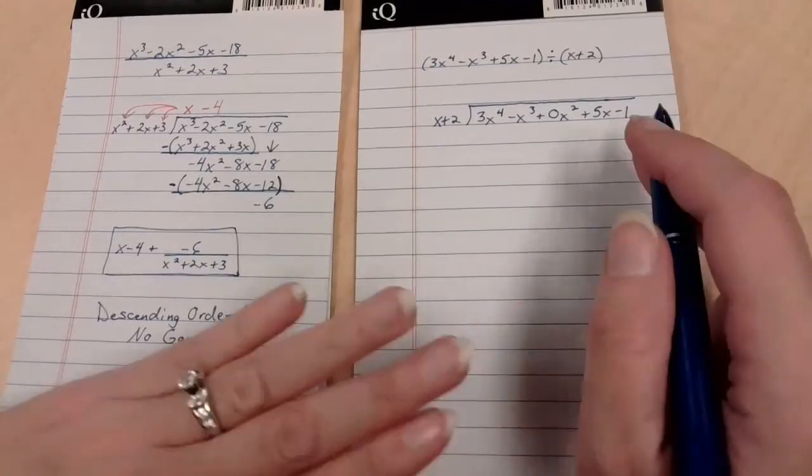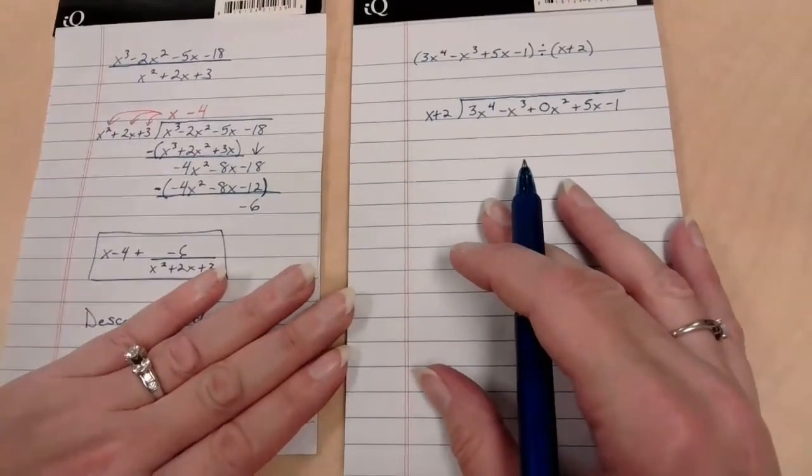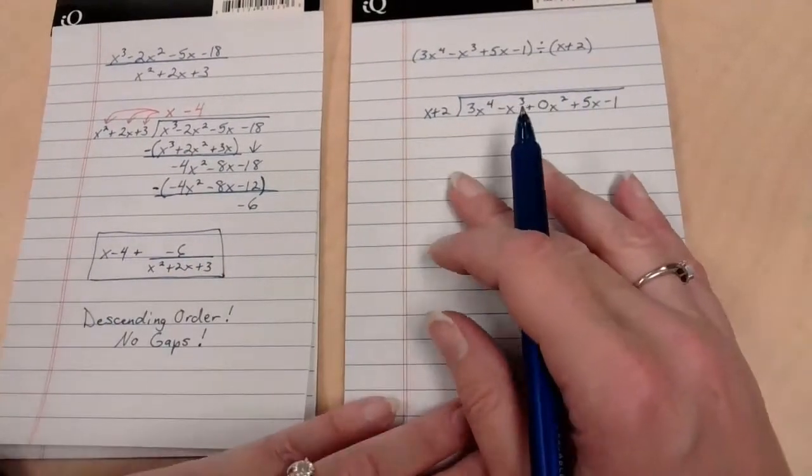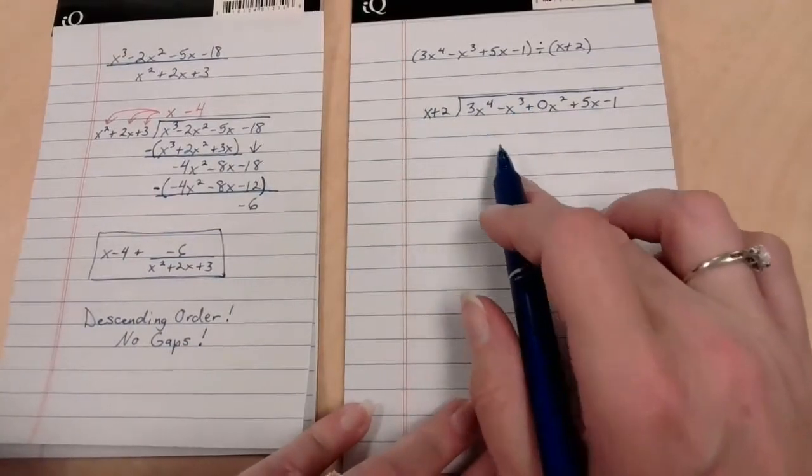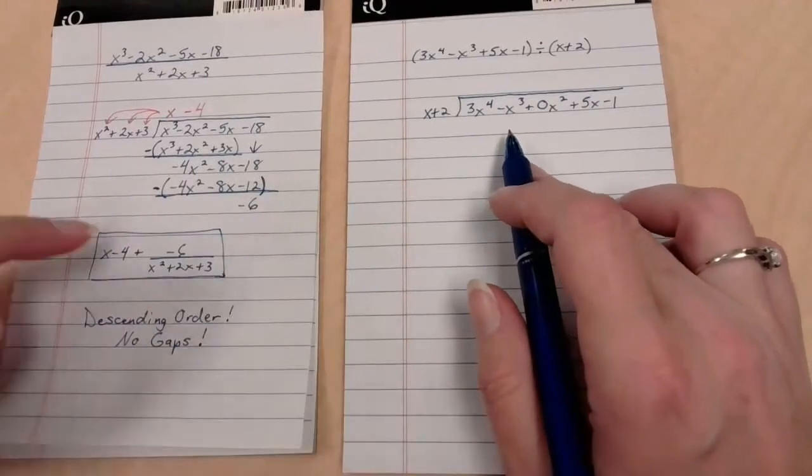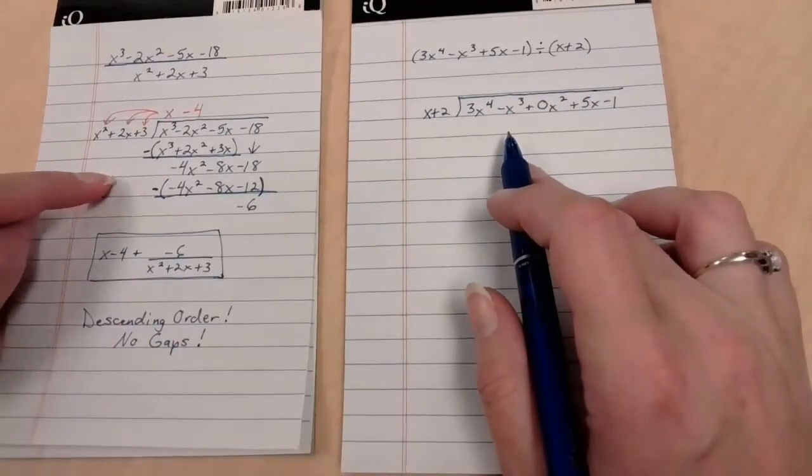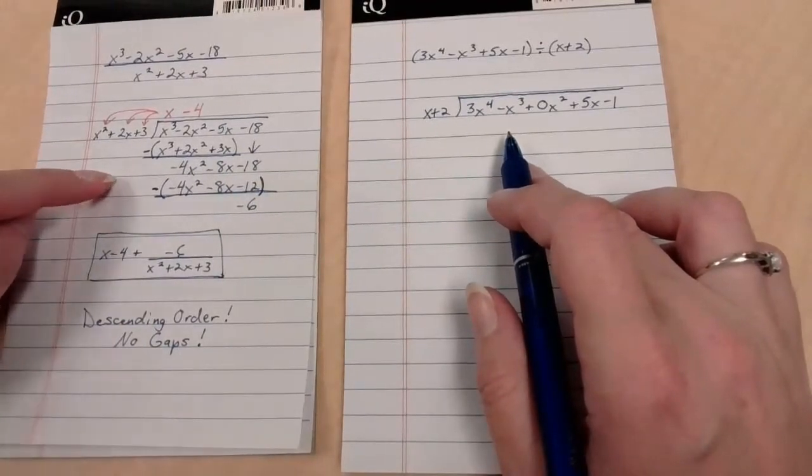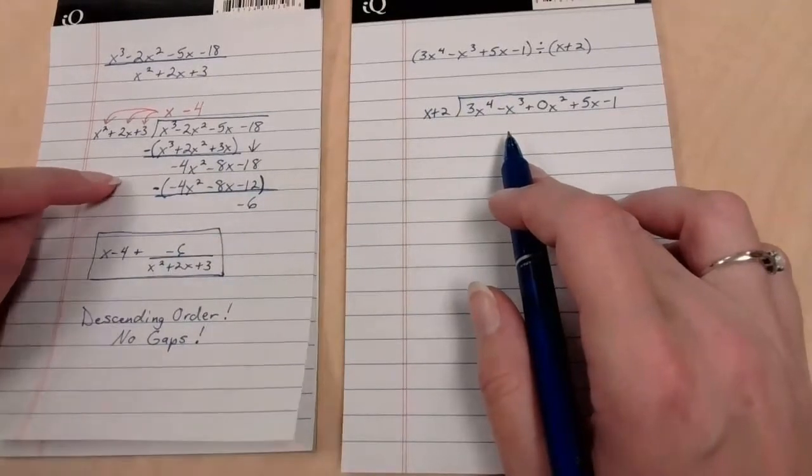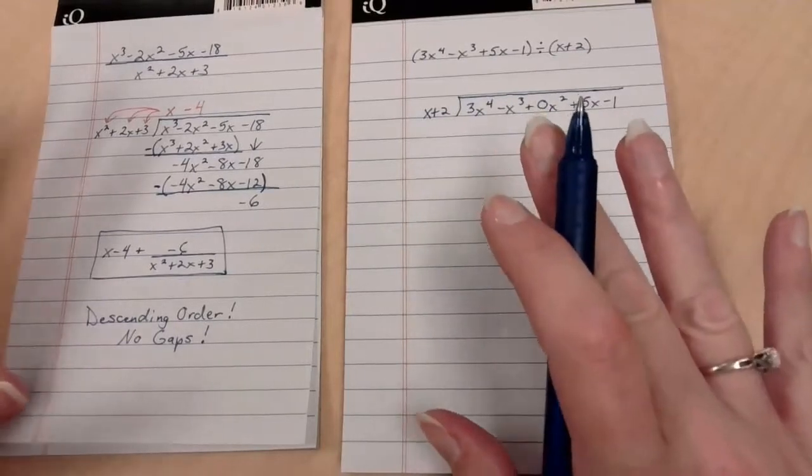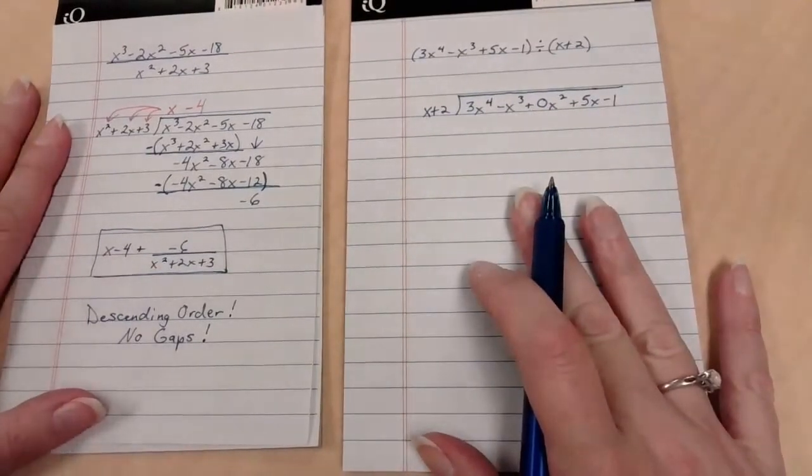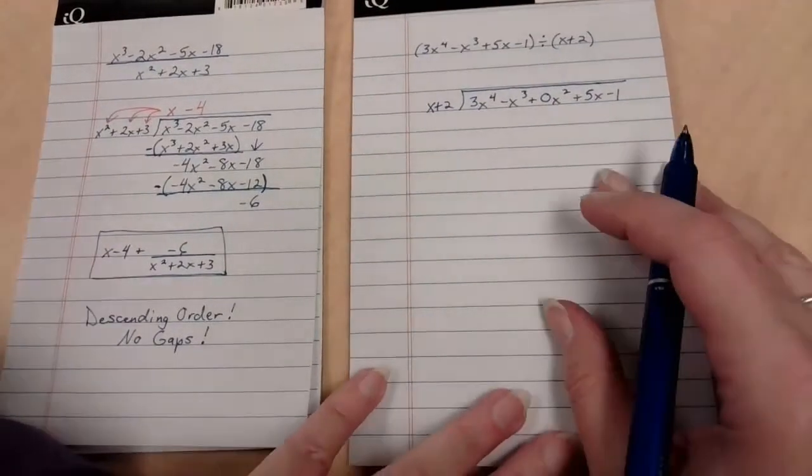Now, I want you to be brave. I want you to pause this video. And I want you to do your best to actually divide this using this as a model. And then come back to me. It'll probably go terribly wrong. And that's okay. Write in pencil and try this. Okay? So please pause. Now.